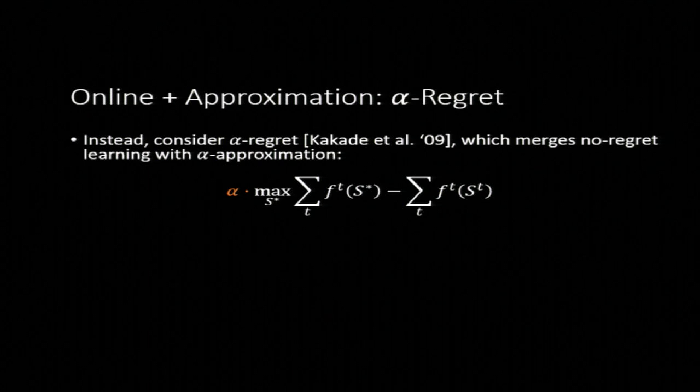And luckily, there is a notion that combines online algorithms with approximation algorithms, and it's called alpha regret. It was introduced by Kakade et al in 2009. You can see the definition of alpha regret is almost identical to our definition of regret from before. The only difference is that this first term over here has an alpha tacked on in front. So for example, if we're talking about one-half regret, instead of aiming to compare with the best fixed action, we're aiming to compare to one-half of the value that that best fixed action is getting. And so, just like no regret, we can define no-alpha regret. That just means the alpha regret is sublinear in T.